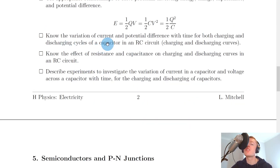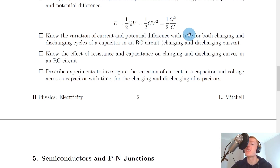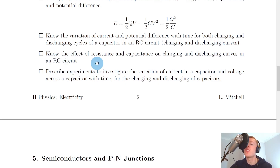Next, you need to know the variation of current and potential difference with time for both charging and discharging cycles of a capacitor in an RC circuit — the charging and discharging curves. You need to know the graphs for current against time, potential difference across a capacitor against time, and potential difference across a resistor against time for both charging and discharging. You also need to know the effect of resistance and capacitance on these curves. Increasing the resistance or increasing the capacitance will increase the time taken for a capacitor to charge and discharge — it takes longer to reach maximum potential difference or to decrease to zero current.